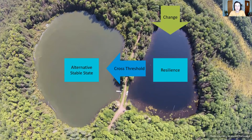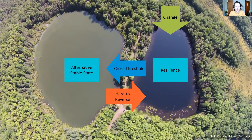Crossing this threshold is hard to predict. We know at some point the lake will change, but we don't know exactly when. And once this has happened, it's hard to reverse. The nutrients are in the lake, and even if the algae dies off, the nutrients remain there. So it's hard to reverse these changes once they happen.